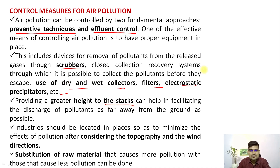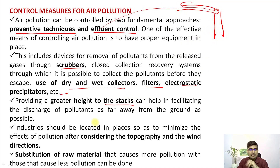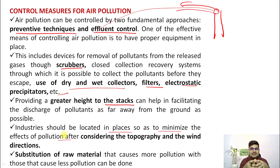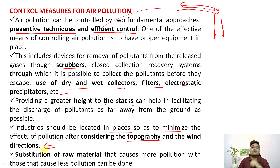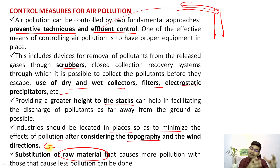Providing greater height to stacks means emissions travel greater distances and gradually assimilate into the air. Industries should be located to minimize pollution effects. For developing countries like India, space is itself a problem, so preventive measures must be prioritized over locational measures. Considering topography and wind directions is also important. Substitution of raw materials that produce more pollutants with alternative solutions through technology could also be a remedial measure for air pollution.